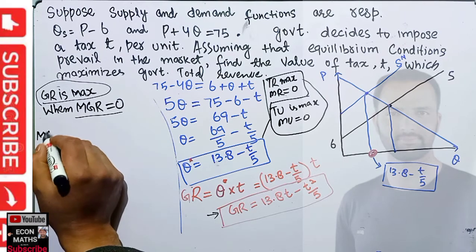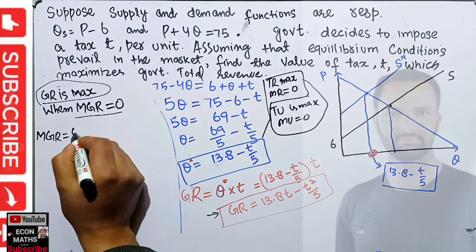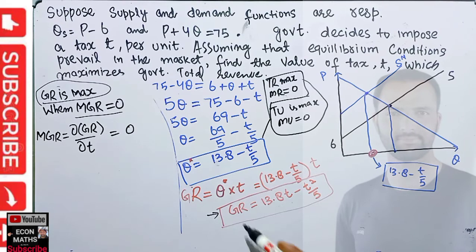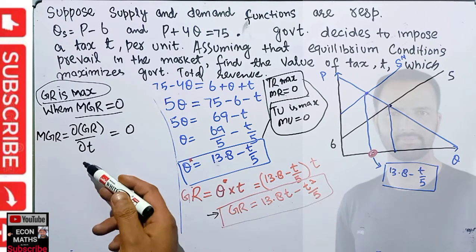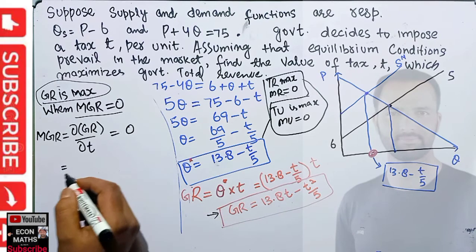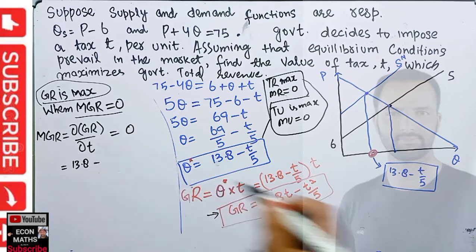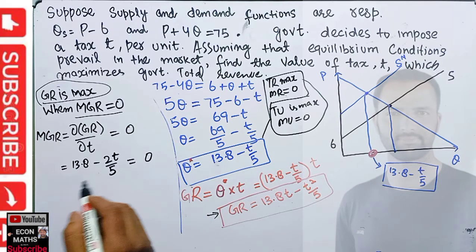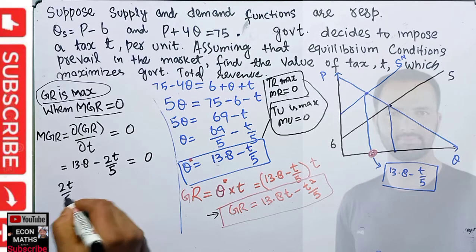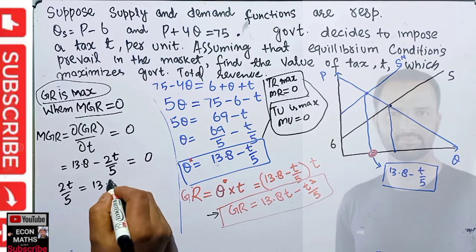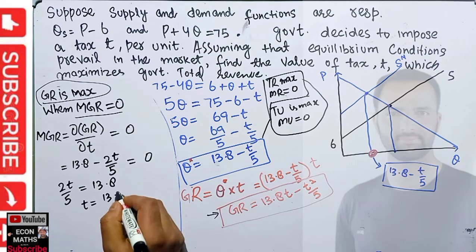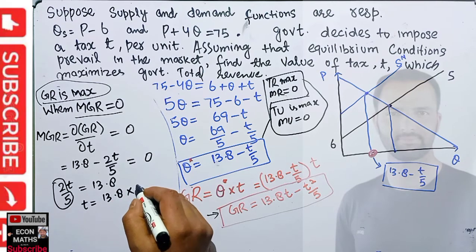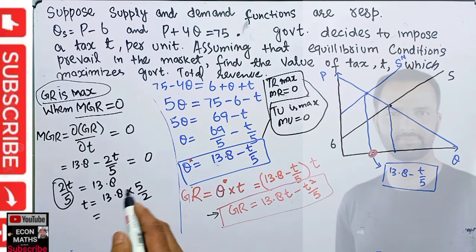Marginal government revenue is the derivative of government revenue with respect to tax T, set equal to zero. Differentiating: derivative of 13.8T is 13.8, and derivative of T²/5 is 2T/5. So we get 13.8 - 2T/5 = 0, which gives 2T/5 = 13.8, and therefore T = 13.8 × (5/2).